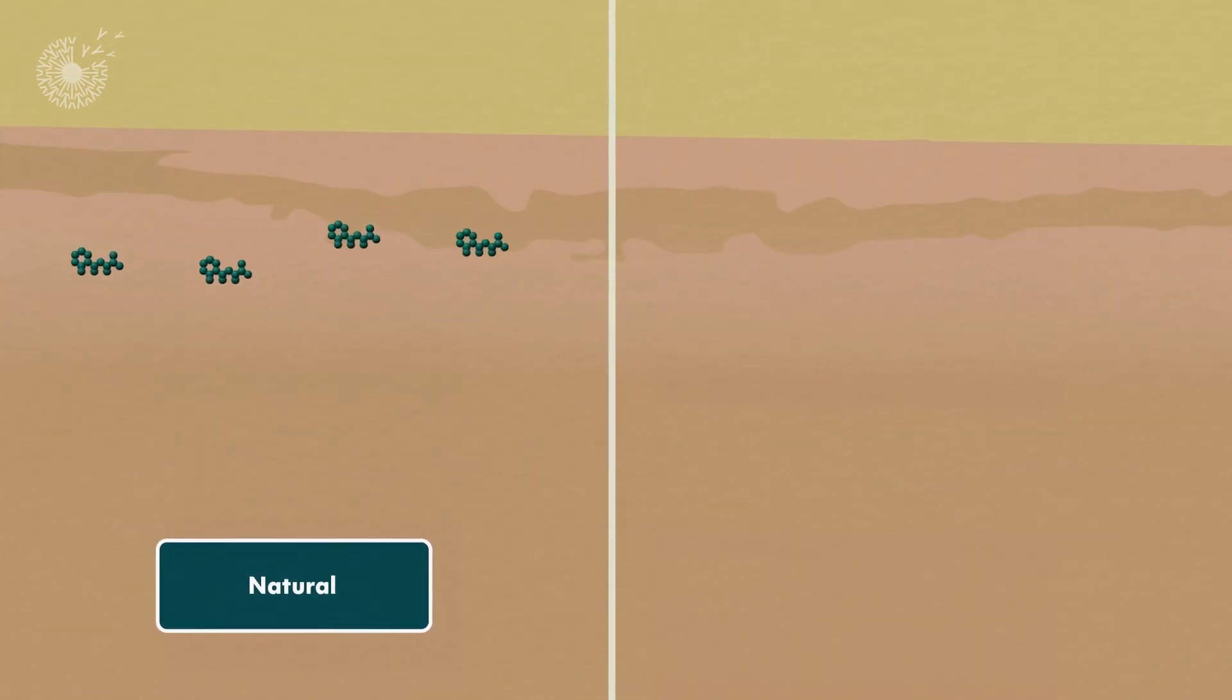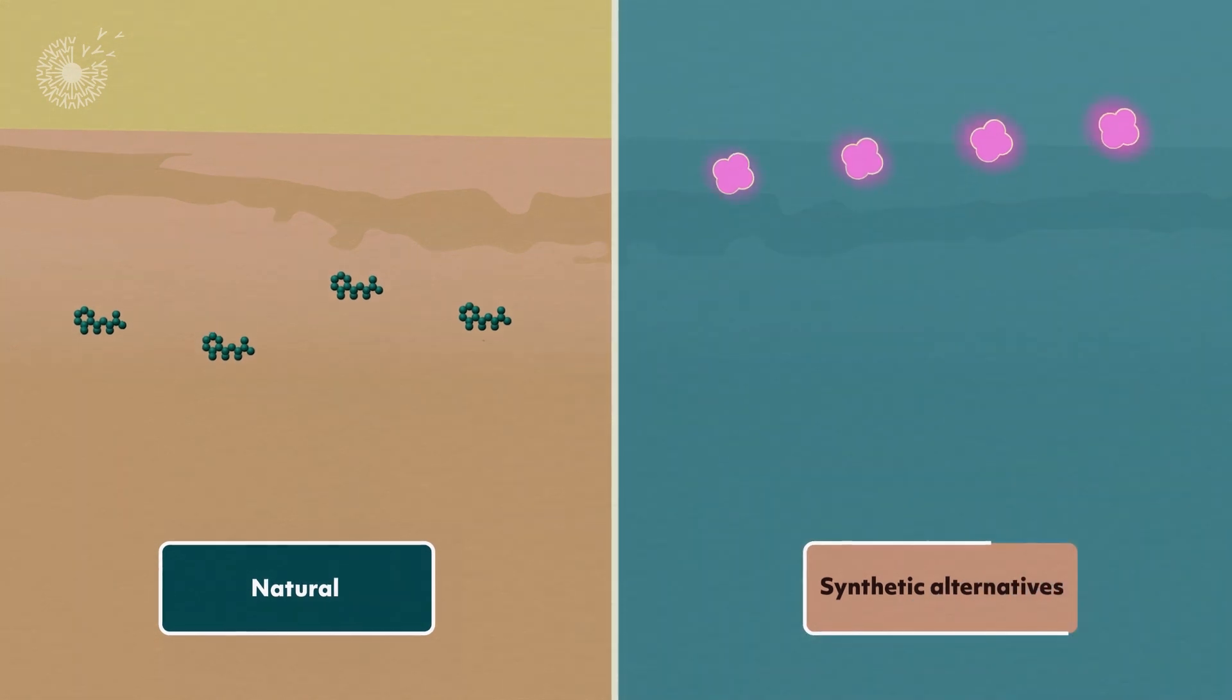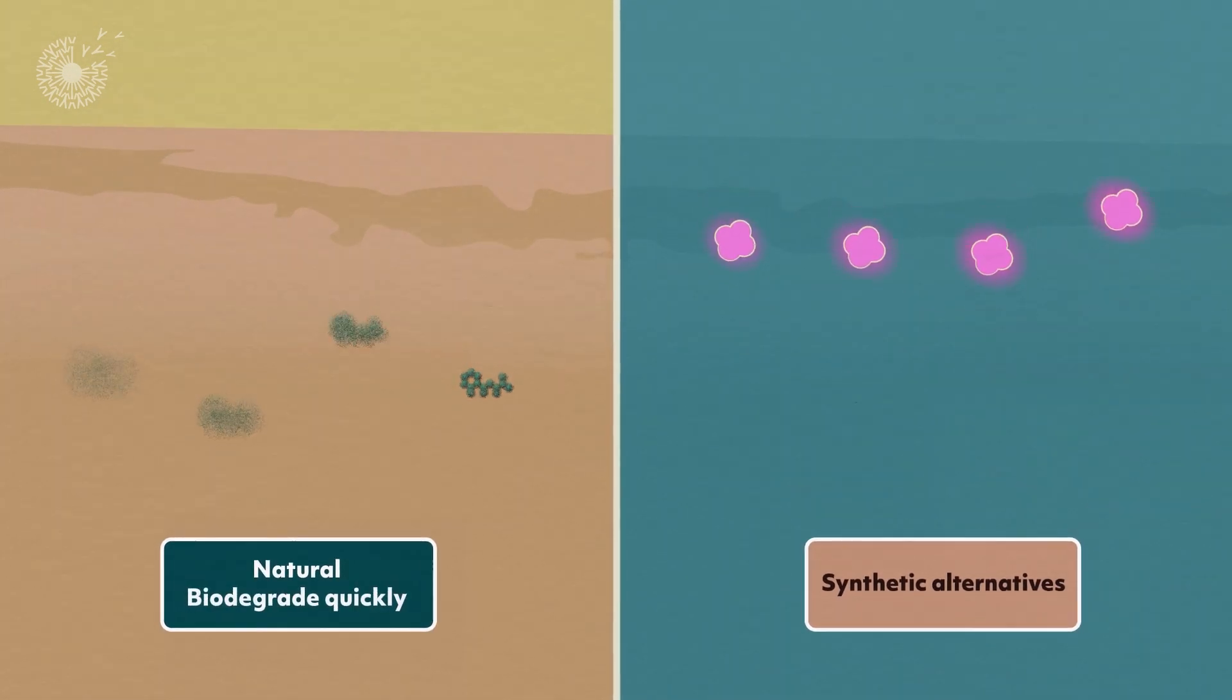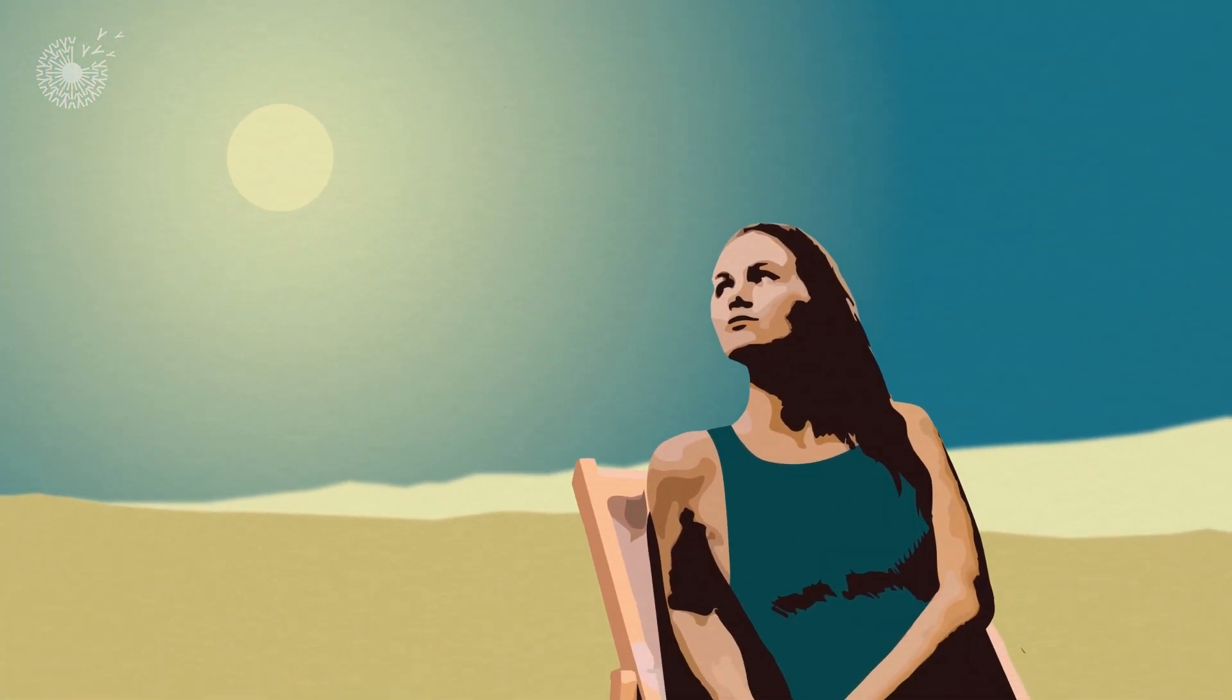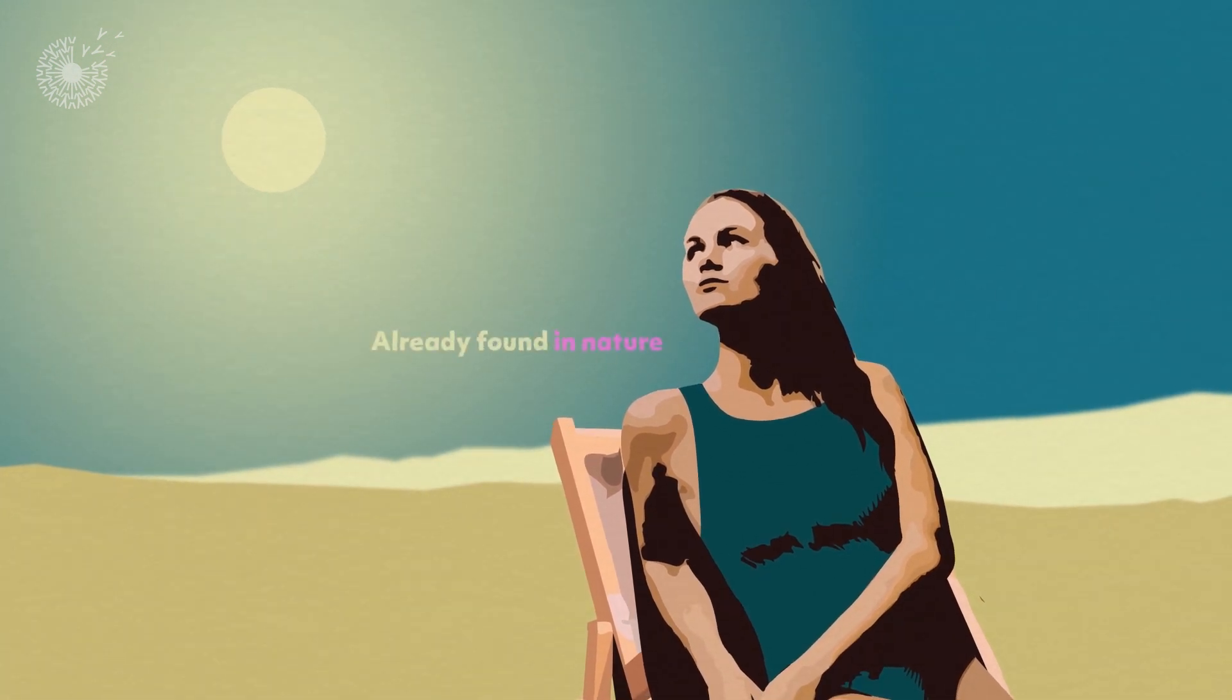And even if the kynuranines were absorbed, they are natural products that don't pose the same risk as the synthetic alternatives, and they biodegrade quickly. An answer for effective, economical sunscreens that protect our health and the health of our planet could already be found in nature. We just had to see it with our own eyes.